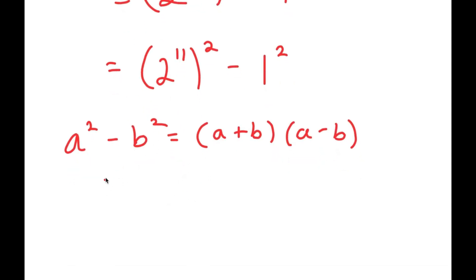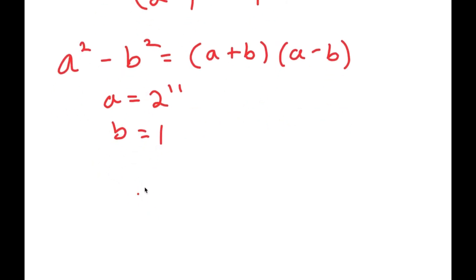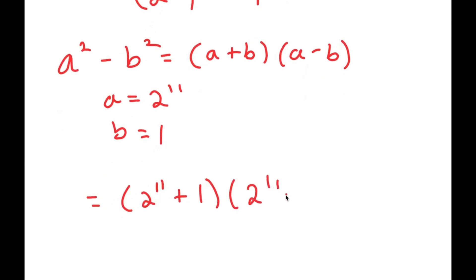Just to clarify, a is 2 to the power of 11 and b is 1. So now I get 2 to the power of 11 plus 1 times 2 to the power of 11 minus 1.